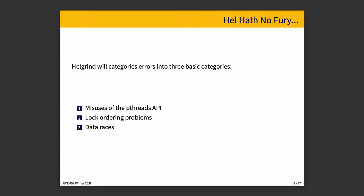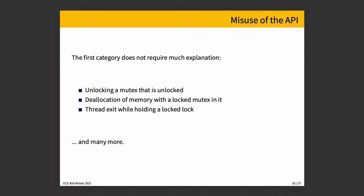The first category really doesn't require a lot of explanation. It is if Helgrind observes at runtime something like unlocking a mutex that is unlocked, or deallocation of memory with a locked mutex in it, or a thread that exits while holding on to a lock that is locked, it will report that as an error.